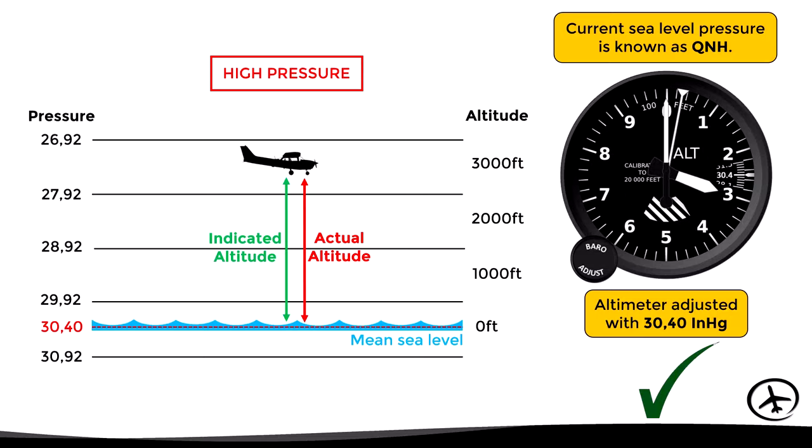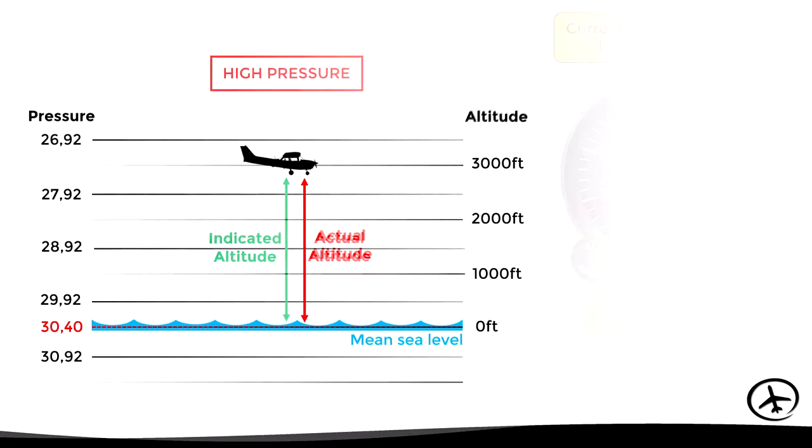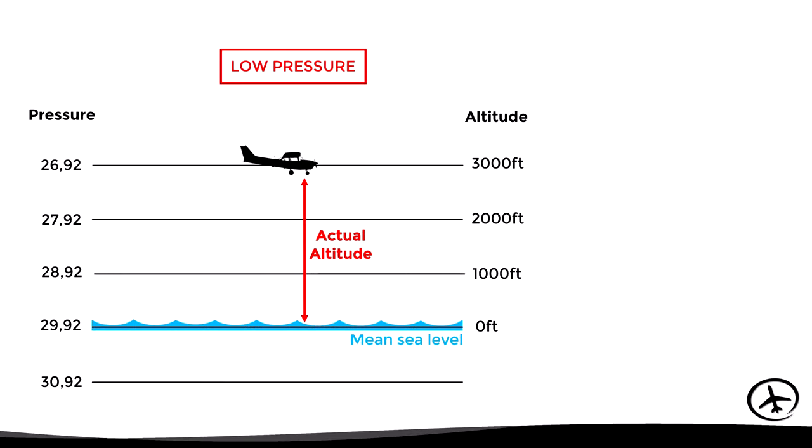The current pressure level that identifies the mean sea level at a certain moment is known as QNH, and it varies depending on atmospheric pressure changes. It is therefore important that the pilot receives updated QNH information at regular intervals while flying, in order to adjust the altimeter to indicate the actual altitude precisely.